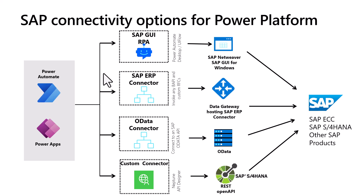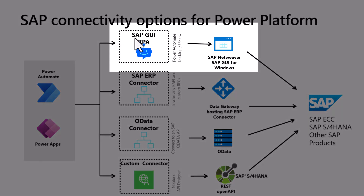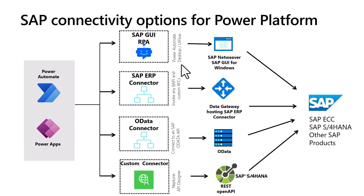The different connectors available on the Power Platform address different skill sets. Starting with the top one — the SAP GUI RPA functionality, which is actually Power Automate Desktop — it allows you to connect via user interfaces to your SAP system. Basically, this is where you can automate clicks and simple scripts to do work on your desktop.